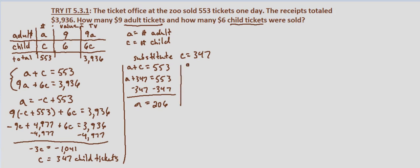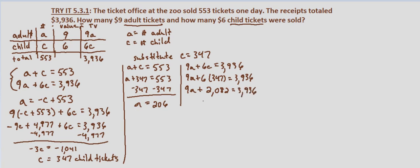That gives us a equals 206 adult tickets. We check in the other equation: 9a plus 6c equals 3,936. Six times 347 is 2,082, so 9a plus 2,082 equals 3,936. Subtracting 2,082 from both sides gives 9a equals 1,854, and dividing by 9 gives a equals 206.